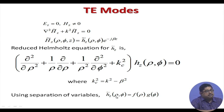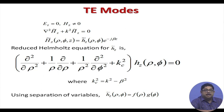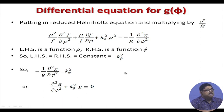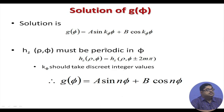Again, we apply separation of variables and break the solution into f(rho) and g(phi). We have already done this in the case of field analysis for coaxial lines — when we saw the coaxial field analysis, a similar approach was used. We get the k_phi and k_rho squared terms, and the solution is similar.